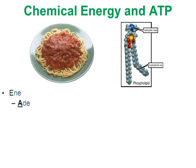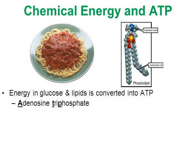As we discuss chemical energy and ATP, the food that we eat will supply the glucose and the lipids required to build ATP molecules. Pasta is high in carbohydrates, and glucose is a carbohydrate. There are also lipids in the foods we eat, and so glucose and lipids from our foods are going to be used to build ATP molecules — adenosine triphosphate.